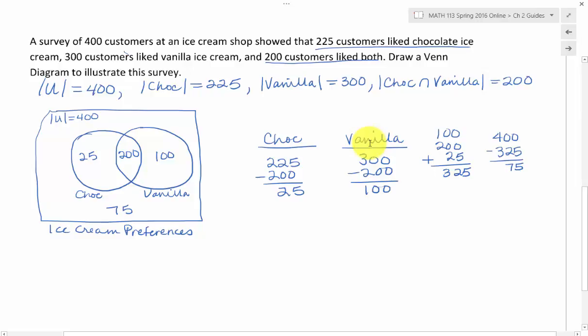I did the same thing for vanilla. I took the 300, which was the cardinal number for vanilla, and subtracted off the 200, which was the people who also liked chocolate, and I got 100 people liking only vanilla and not chocolate.